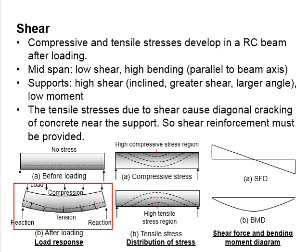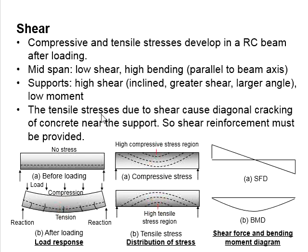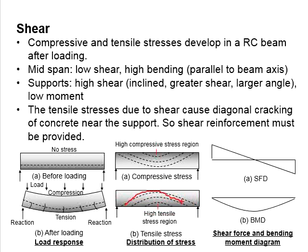Under vertical load, flexural cracks normally occur at the mid-span of the member. This is mainly due to the high level of tensile stress. As the applied load increases, more flexural cracks develop along the way towards the support. From the stress profile, this region undergoes a similar level of tensile stress, and this region will give a lower level of stress.